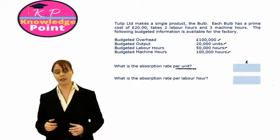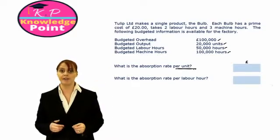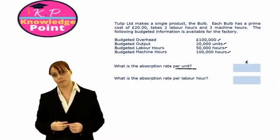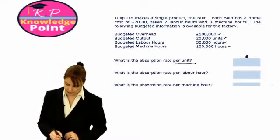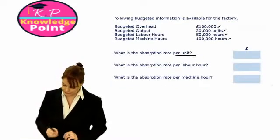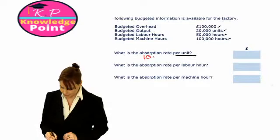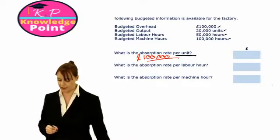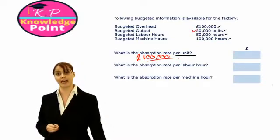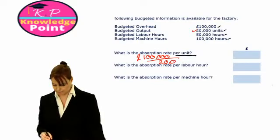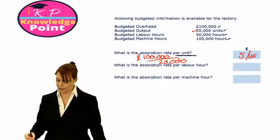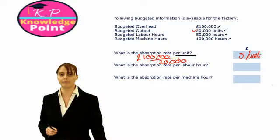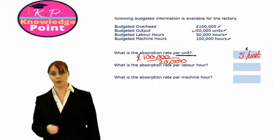If we calculate our overhead absorption rate on a per unit basis, we look at our total budgeted overheads and divide by our total budgeted production. So our OAR is £100,000 divided by our budgeted output of 20,000 units, and we get an overhead charge of £5 per unit.